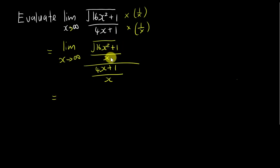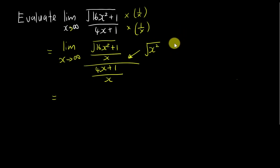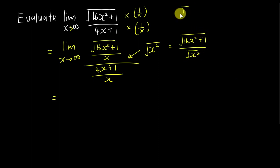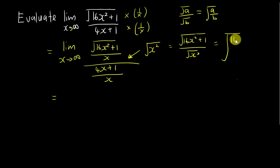Because this is power 1, if I want to include it inside the square root, the x to the power 1 can be written as square root of x squared. Using the indices rule — square root of a over square root of b equals square root of (a over b) — I can join them together.